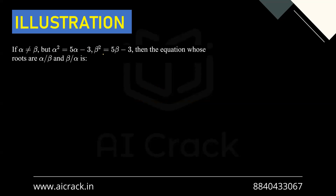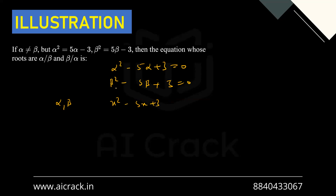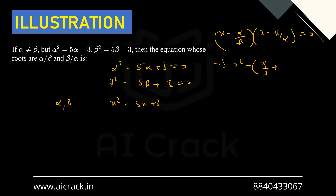Next problem: if α ≠ β but α² = 5α − 3 and β² = 5β − 3, find the equation whose roots are α/β and β/α. The given conditions mean α² − 5α + 3 = 0 and β² − 5β + 3 = 0, so α and β are both roots of x² − 5x + 3 = 0. The equation with roots α/β and β/α has the form (x − α/β)(x − β/α) = 0, expanding to x² − (α/β + β/α)x + 1 = 0.